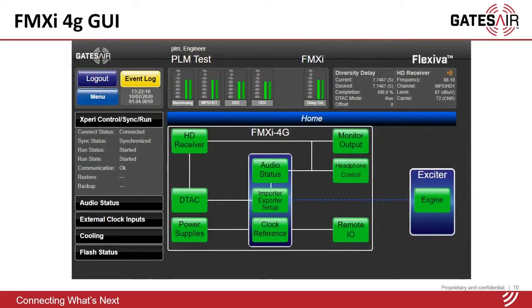If we take a look at the user interface, one of the first things you'll notice in the upper right hand corner is the status of the HD receiver. The orange HD logo there tells me that we're currently receiving HD, it's being decoded by the receiver, and HD is on the air. We also get other information from the tuner such as the carrier level and the carrier-to-noise ratio.